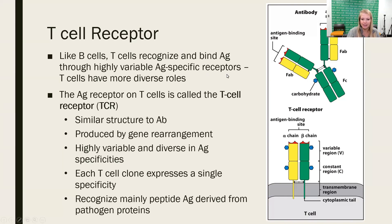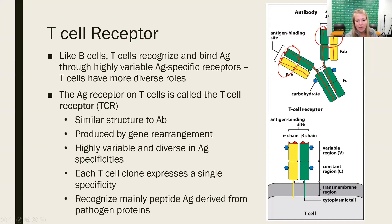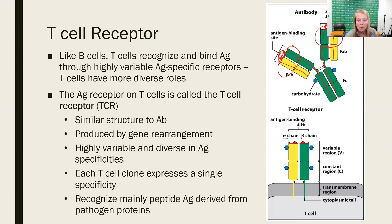Looking at the images on the slide: recall the antibody has heavy chains and light chains, with a variable region at the end terminus of the heavy chain and an antigen binding site at the tip where that highly variable set of amino acids is. The T cell receptor looks very similar — there are two chains, but instead of a heavy and a light chain, we have an alpha chain and a beta chain. They're going to be about the same in weight, which is why we don't call them heavy and light, but they associate together just as we saw with heavy and light chains in an antibody. They also have a variable region at the N terminus and a constant region at the C terminus.